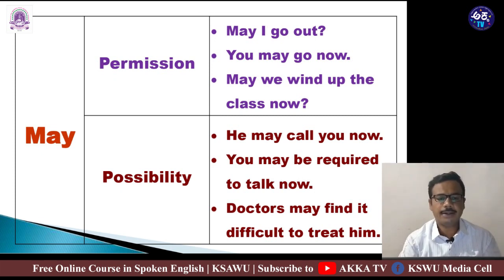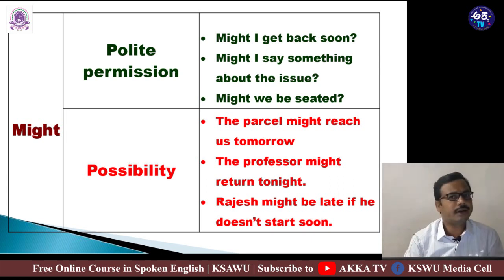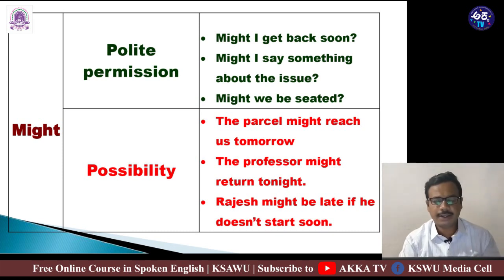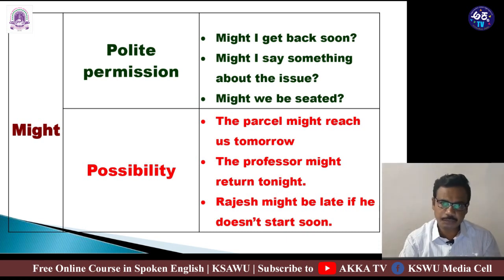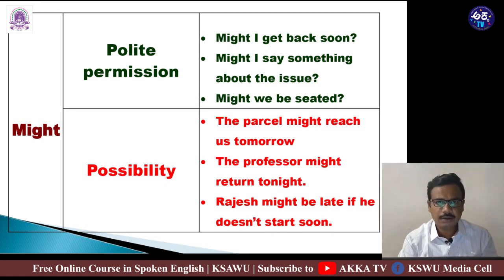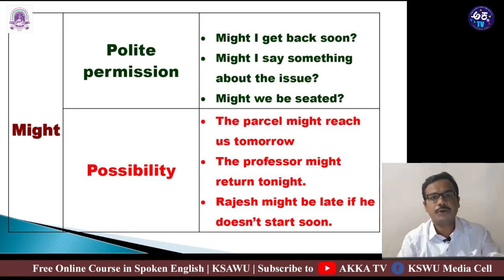Now we move on to the next modal auxiliary, that is 'might'. 'Might' also works just like 'may' but it is more polite when seeking permission. For example: 'Might I get back soon?' — the person sounds very polite. 'Might I say something about the issue?' — he is humbly seeking permission to speak. 'Might we be seated?' — seeking permission to sit.